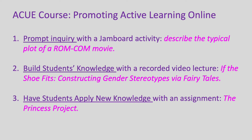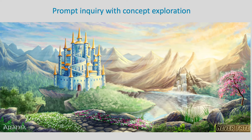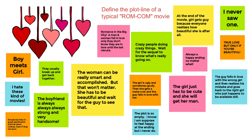So I'm going to do the three-step learning cycle here. Start with a prompt inquiry. I used a Jam Board with just the simple prompt: define the plot line of a typical rom-com movie. And it worked pretty good. People got the concept the way I wanted them to.